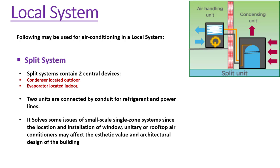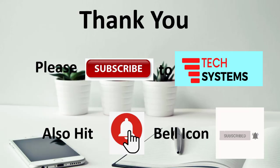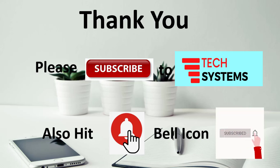The split system solves some issues of small-scale single zone systems, since the location and installation of window, unitary, or rooftop air conditioners may affect the aesthetic value and architectural design of the building. A split system can contain one condenser unit connected to multiple evaporator units to serve multiple zones under the same or different environmental conditions. That concludes this HVAC introduction video — please like and subscribe to be notified of future videos.